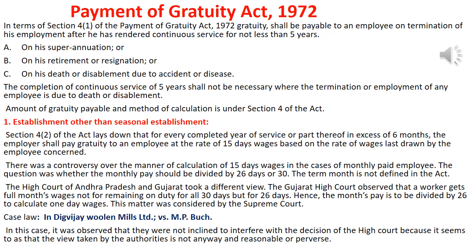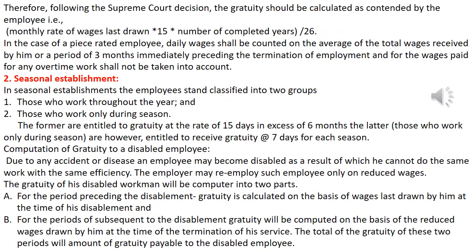This position was agreed upon by the Supreme Court, and in the case of Digvijay Woollen Mills Ltd. vs. M.P. Bucha, the same ruling was observed. The Supreme Court did not interfere with the High Court's decision. So Gratuity is calculated as: monthly rate of wages last drawn × 15 × number of completed years of service ÷ 26.